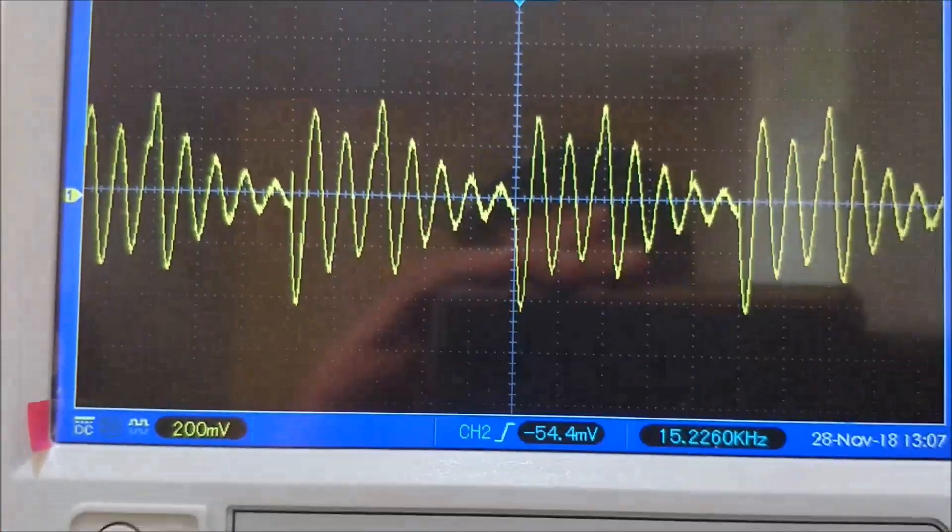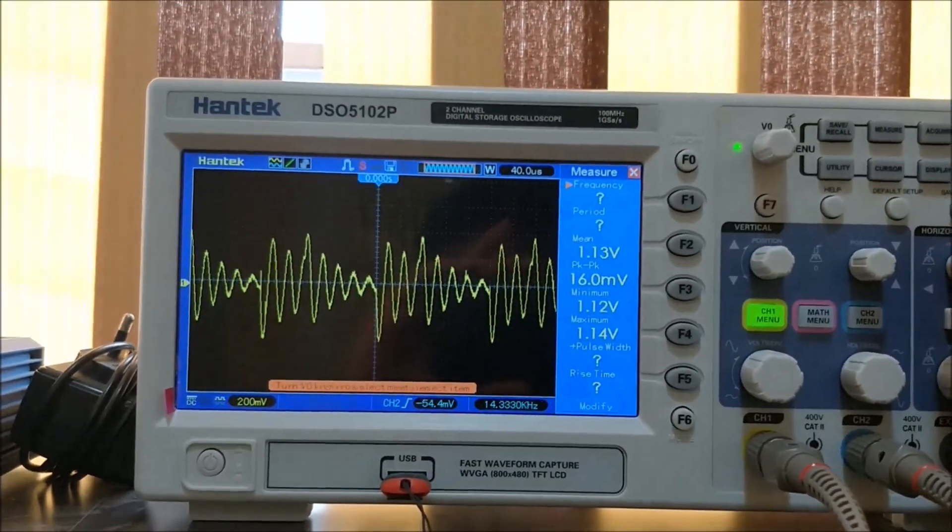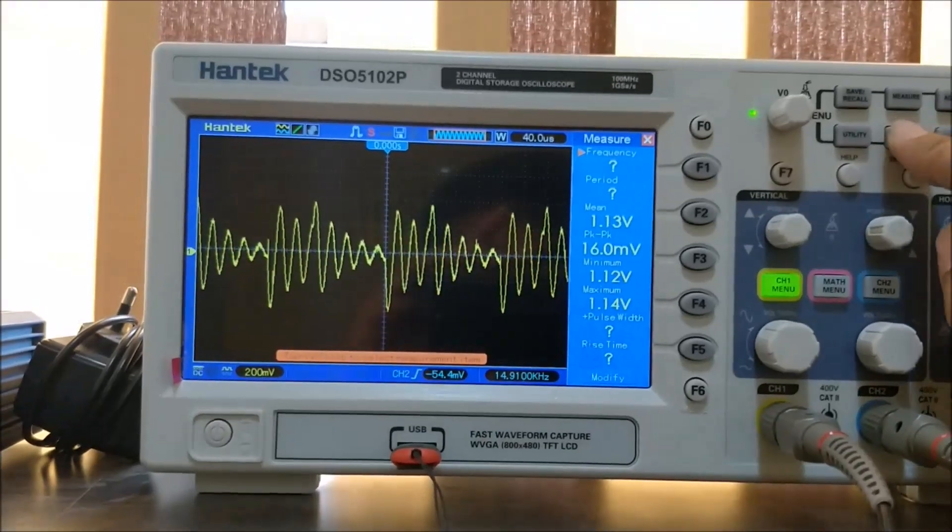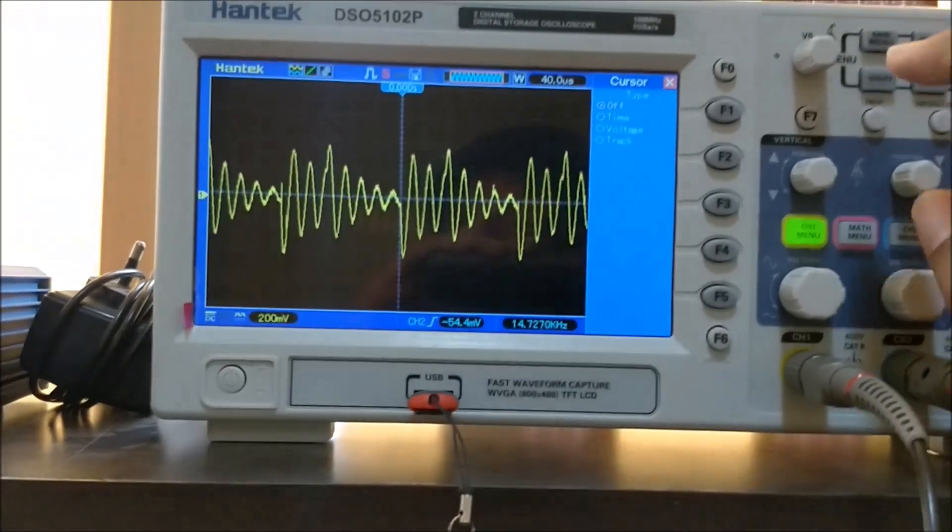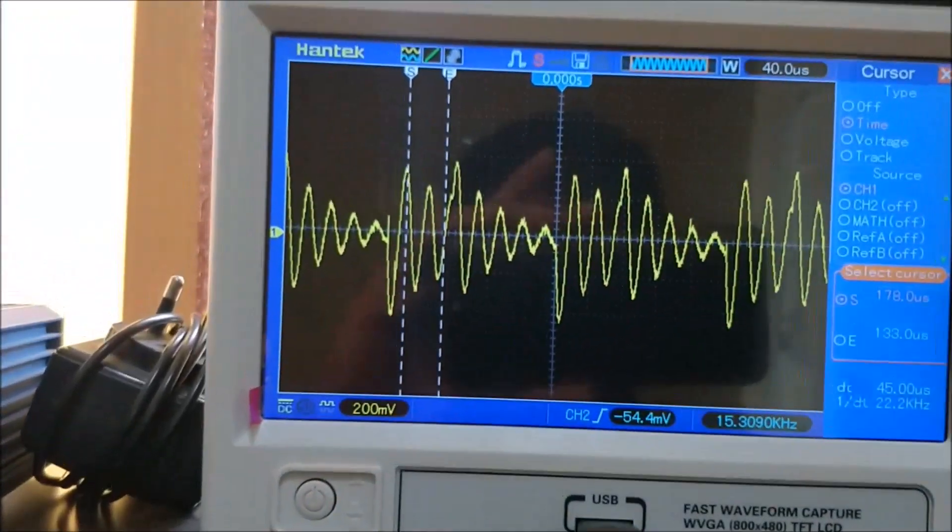As you can see, we are getting the resonance wave. We can then use the measure option on the oscilloscope and the cursor option to measure the time division. Then you can place the cursors.